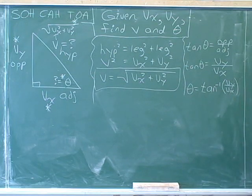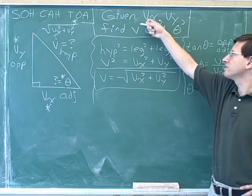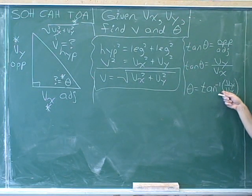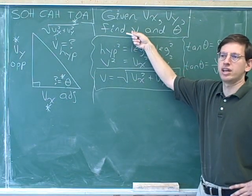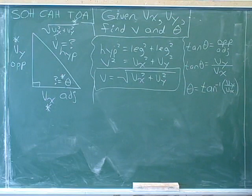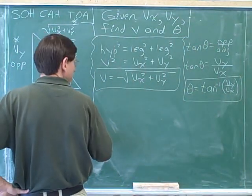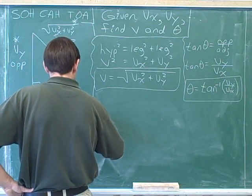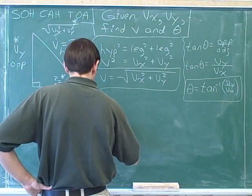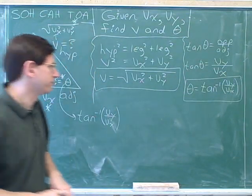Is this an acceptable answer? Yes. We've figured out what theta is, and our answer only includes the givens, v sub x and v sub y. This would not be acceptable if it included v, because v was an unknown. Since this answer only uses the givens, it's a good acceptable answer. This angle is the inverse tangent of v sub y over v sub x.